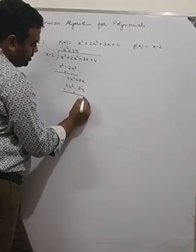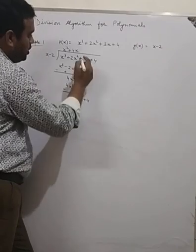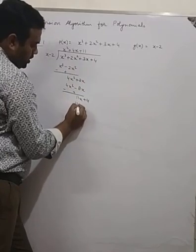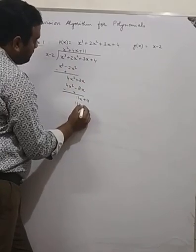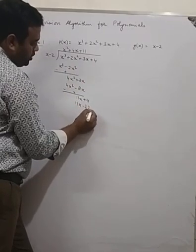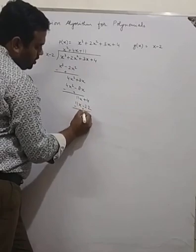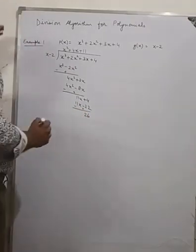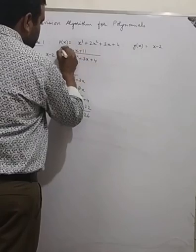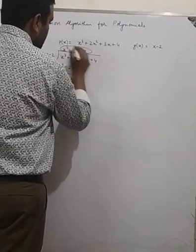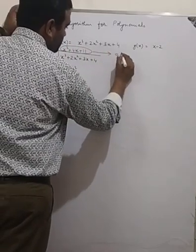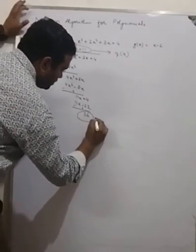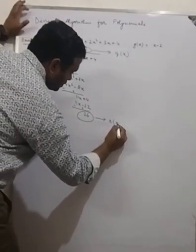This gives us 11x + 4. This goes 11 times giving 11x − 22. When we subtract again this gives us 26. So Q(x) is x² + 4x + 11 and R(x) is 26.